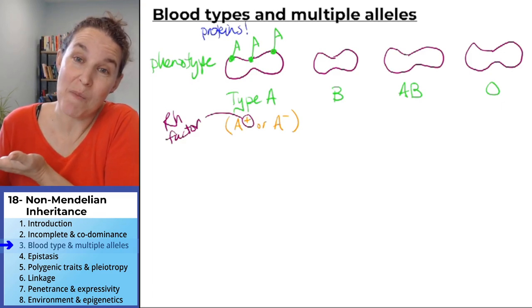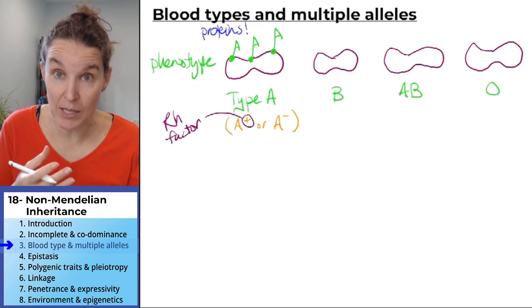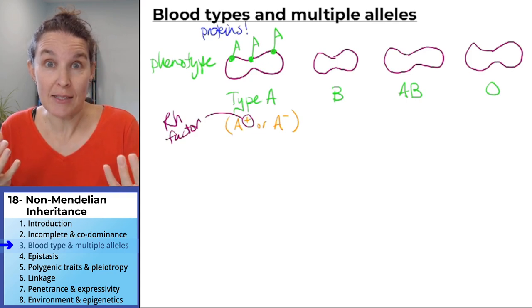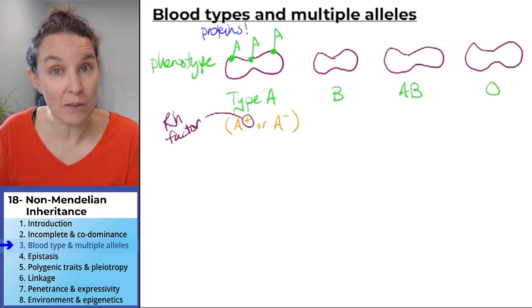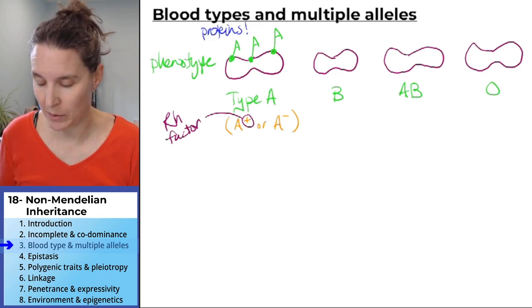Proteins are coded for by genes. So we need a gene, the blood type gene, to tell us what kind of antigens to build proteins to embed in the cell membrane of a red blood cell.